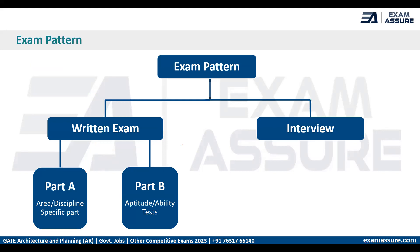As far as the exam pattern is concerned, the exam is divided into two stages: the written exam and the interview part. In the written exam, there is a further division into Part A and Part B. Part A consists of the respective discipline — questions related to architecture — while Part B contains questions related to aptitude, reasoning, etc. Once a candidate qualifies the written exam, they will be called for the interview.